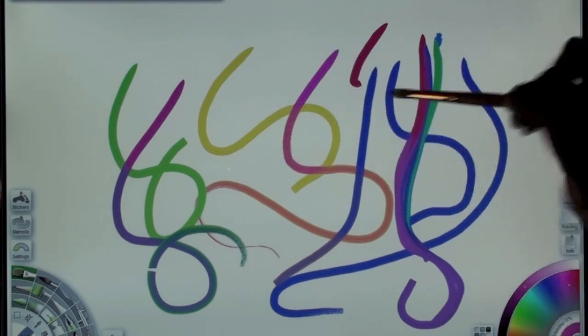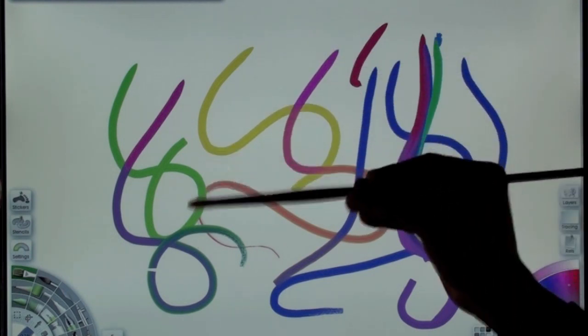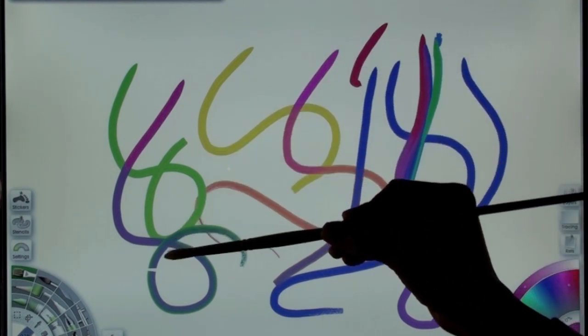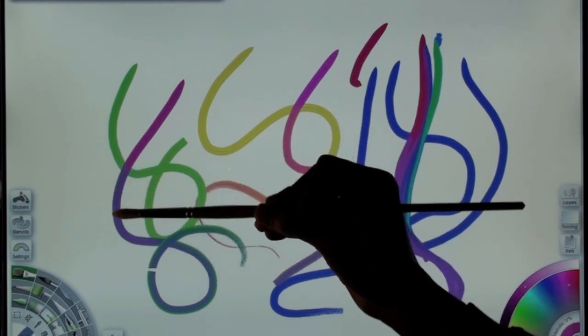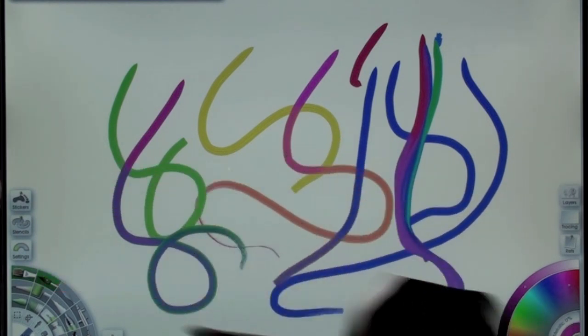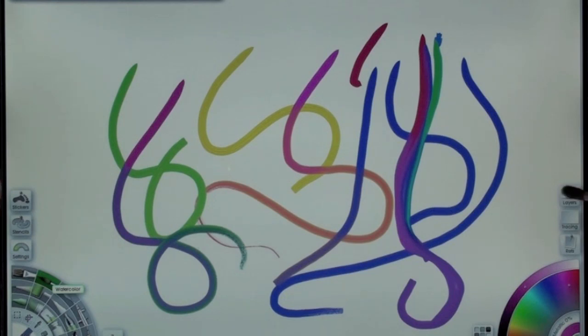This is the oil brush tool. There are three new tools in this version. One is the watercolor tool, and I'm going to put that on a new layer and make this layer invisible.